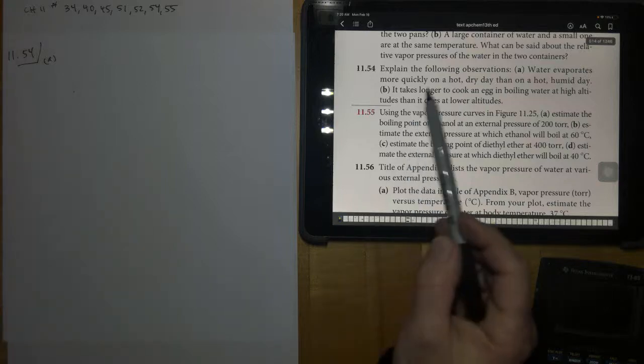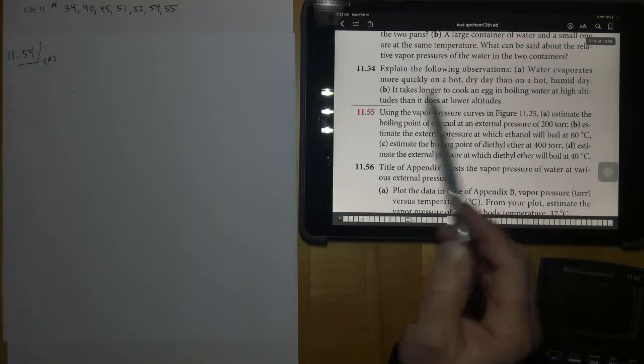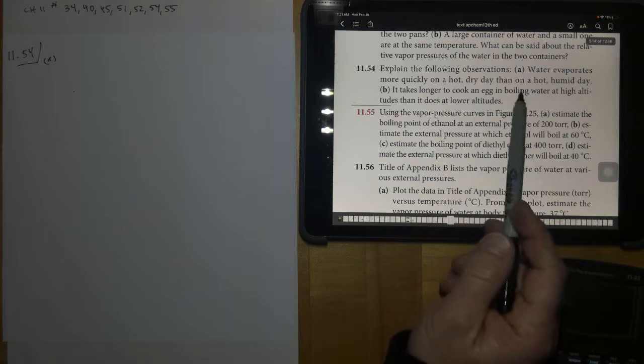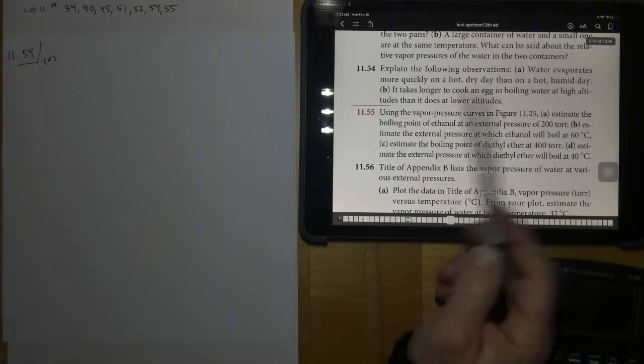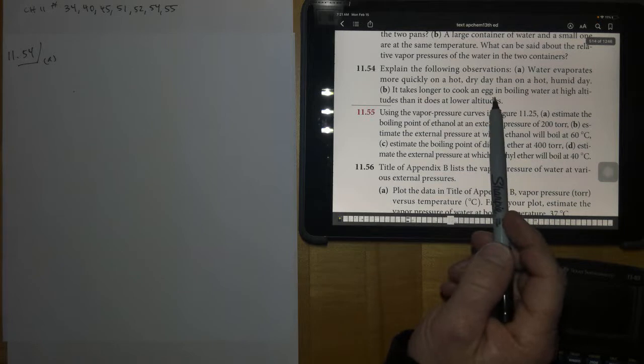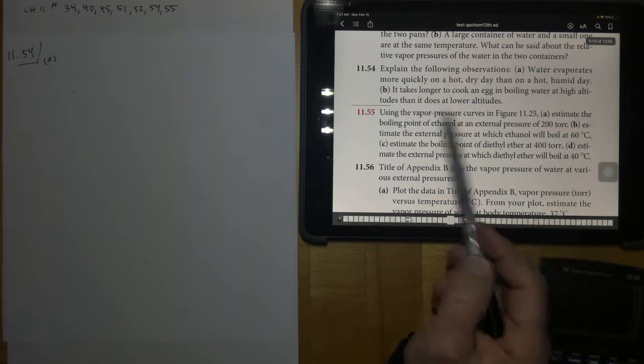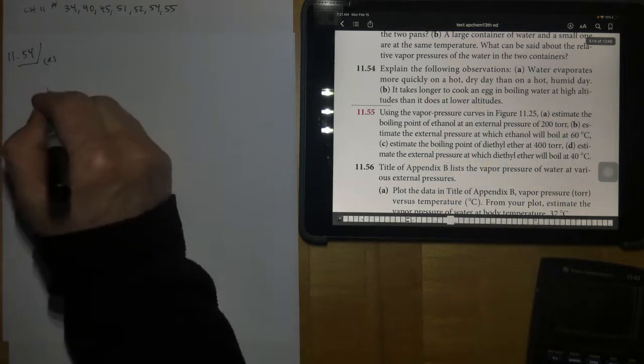This is number 54. Explain the following observations. Water evaporates more quickly on a hot, dry day than on a hot, humid day. And then B. It takes longer to cook an egg in boiling water at high altitude than it does at lower altitudes.